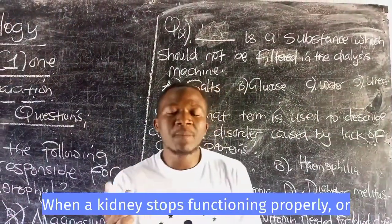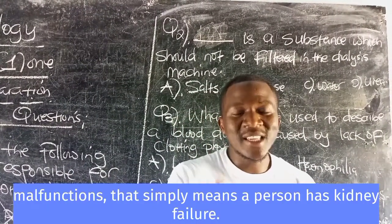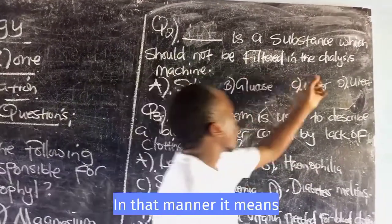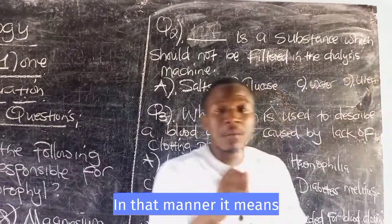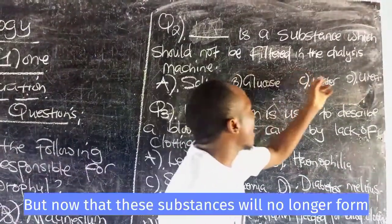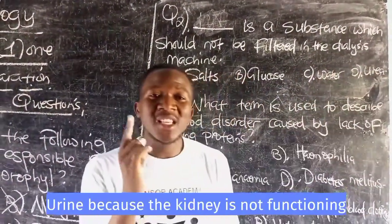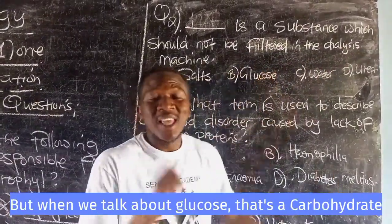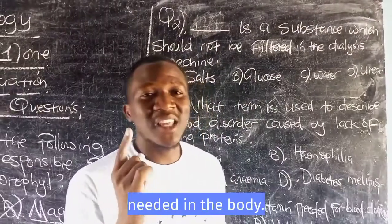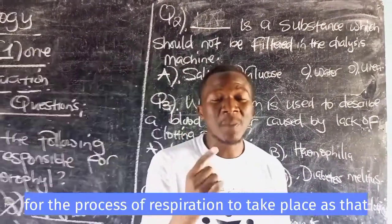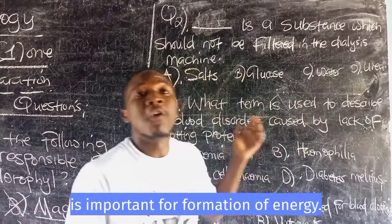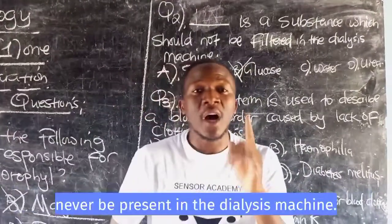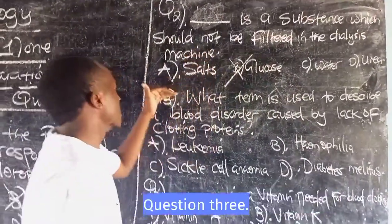When a kidney stops functioning properly, that means a person has kidney failure. In that case, salts, water, and urea would normally form urine, but they will no longer do so because the kidney is not functioning properly — they will instead be filtered in the dialysis machine. But when we talk about glucose, that is a carbohydrate needed in the body for the process of respiration to take place and for the formation of energy. So glucose should not be filtered and should never be present in the dialysis machine.